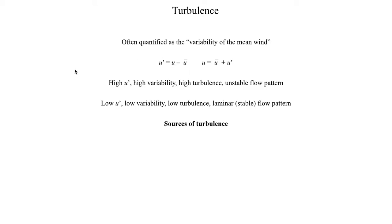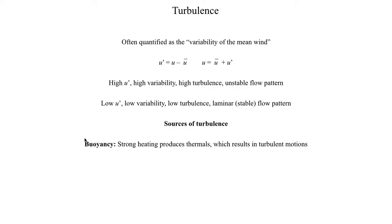Let's talk about some of the sources of turbulence in the atmosphere. One source, touched on in the previous segment on the boundary layer, is rising columns of air. During the daytime, if you've got really strong heating, air near ground level heats up, resulting in buoyant motion — that air wants to rise, producing rising thermals. Those can be a source of turbulent motions, especially if the thermals are rising very rapidly. Another source is friction, which tends to result in wind shear in the atmosphere.